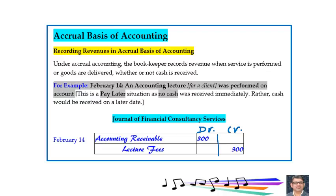In this case, accounts receivable would be debit $300 and lecture fee would be credit $300. In accrual basis, it is to be understood that cash has not been received but still revenue is being recorded. The party from whom cash is to be received on a later date is known as accounts receivable, and that account would be debited.